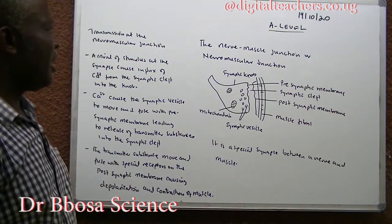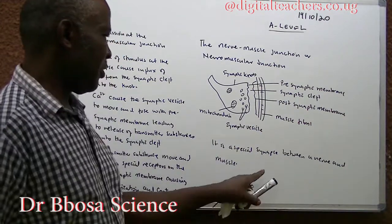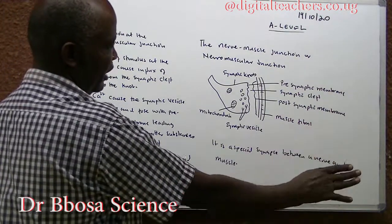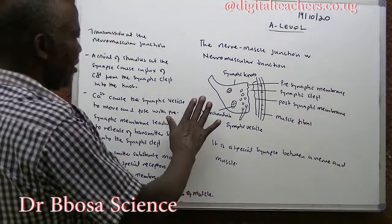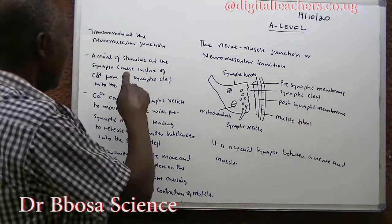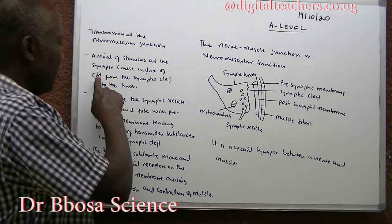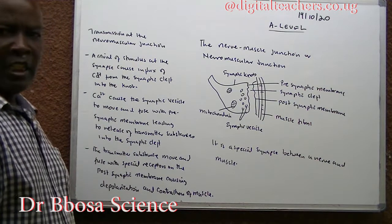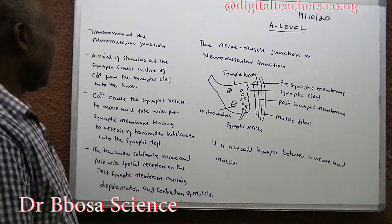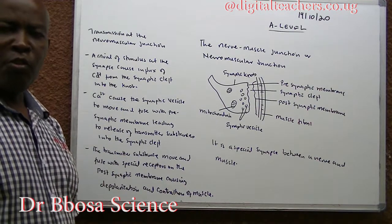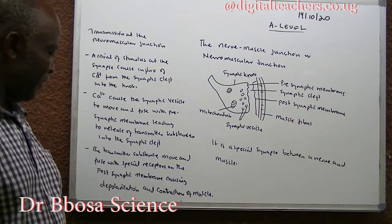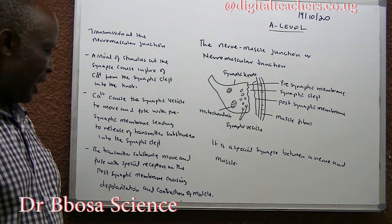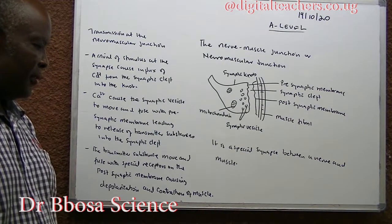The neuromuscular junction is a special synapse between a nerve and a muscle, instead of a second neuron on one side we have the muscle. Transmission at the neuromuscular junction: arrival of a stimulus at the synapse causes influx of calcium ions from the synaptic cleft. Calcium ions cause synaptic vesicles to move and fuse with the presynaptic membrane, releasing transmitter substances into the cleft. The transmitter substances move and fuse with special receptors on the postsynaptic membrane, causing depolarization and contraction of the muscle.